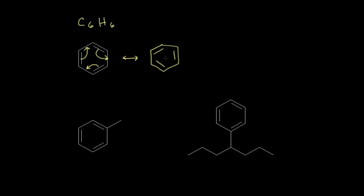Remember, in reality, since these are resonance structures, the actual molecule is more of a hybrid of the two. With that in mind, chemists will sometimes prefer to represent benzene with the six carbons in a ring and a circle in the center to represent the delocalization of those pi electrons. This is called a Robinson circle, after the great synthetic organic chemist Sir Robert Robinson. A Robinson circle is useful at times, while a Kekulé structure is preferred when you're trying to show the mechanism of reactions that benzene undergoes.